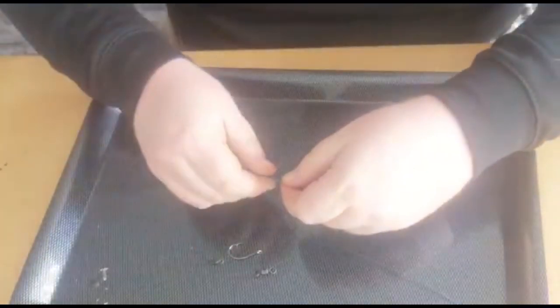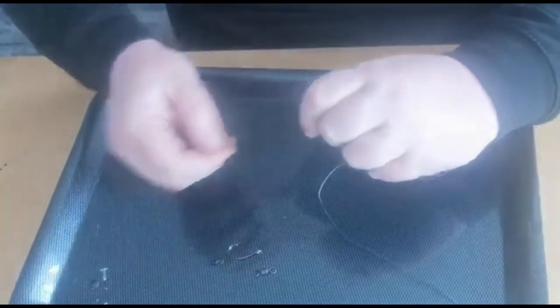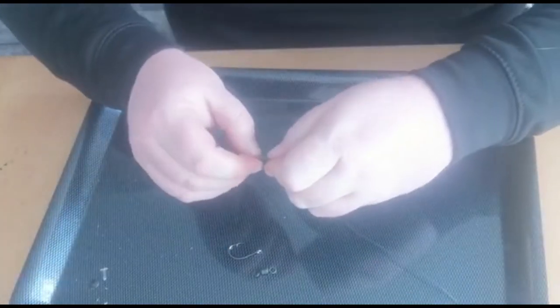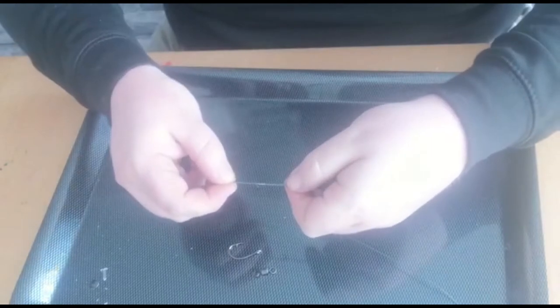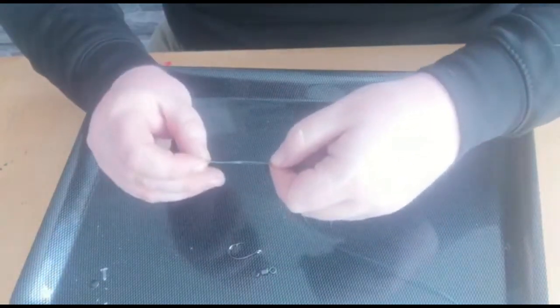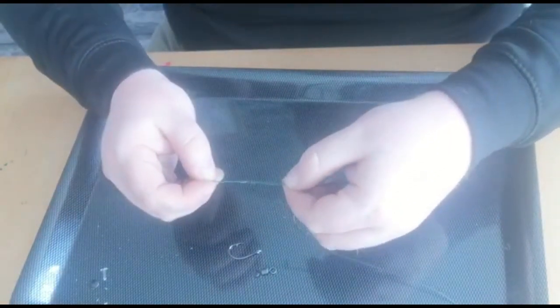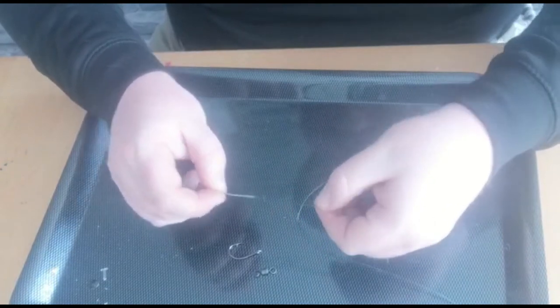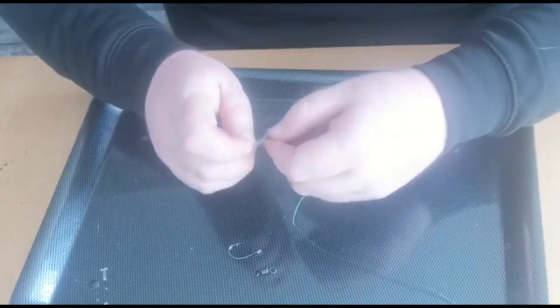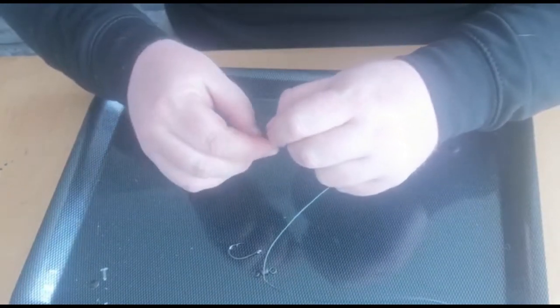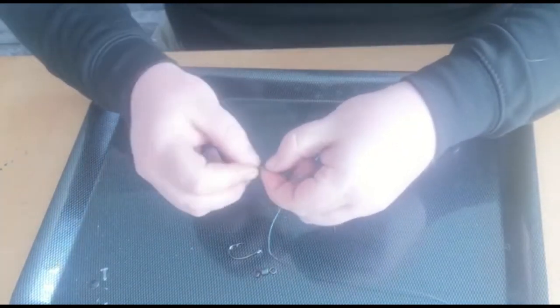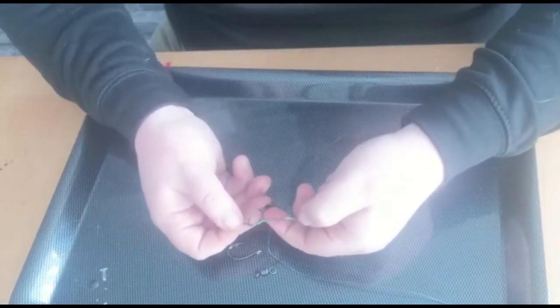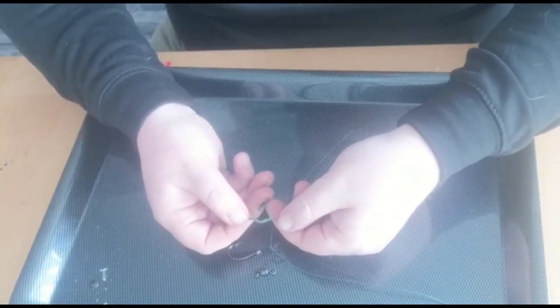You want to start off by taking your swivel, your size 8 swivel, because this is going to just be for your baiting purposes. You want to make a loop and then feed your swivel over the loop. We're going to tie it on using a palomar knot, so I'm going to bring it around and then make another loop through the loop we've just made.